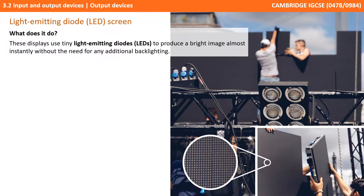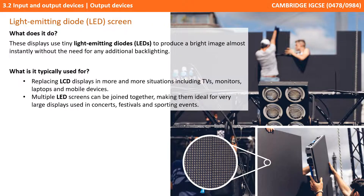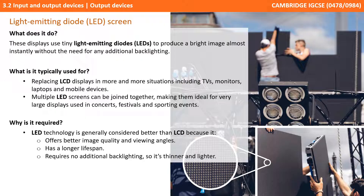The other display technology is light-emitting diodes or LED screens. These displays use tiny light-emitting diodes to produce a bright image almost instantly without the need for any additional backlighting. They're replacing LCD displays in more and more situations, including typical home-use TVs, monitors, laptops and mobile devices. It's very easy for multiple LED screens to be joined together, making them ideal for very large displays at concerts, festivals and sporting events. LED technology is generally considered better than LCD because it offers better image quality and viewing angles, has a longer lifespan, and requires no additional backlighting, so they can be thinner and lighter.